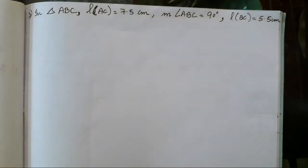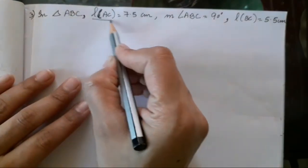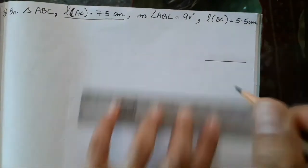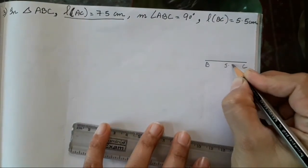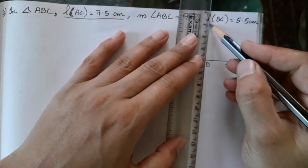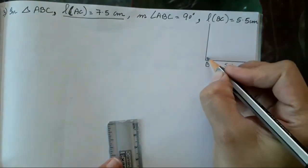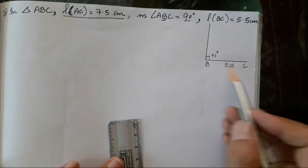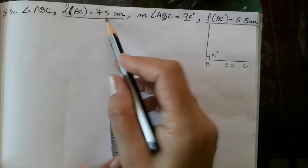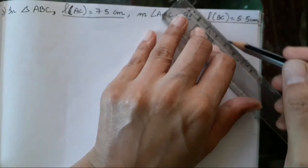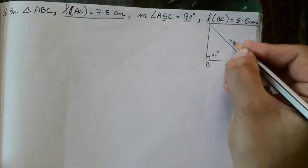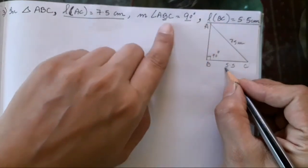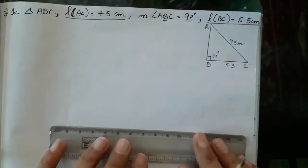Next, draw triangle ABC where AC is 7.5 cm. AC is going to be your hypotenuse since it is the longest side. BC is going to be your base, which is 5.5 cm. Angle B is going to be your 90 degree angle. So: AC = 7.5 cm, BC = 5.5 cm, and angle B = 90 degrees.